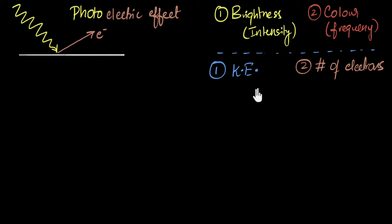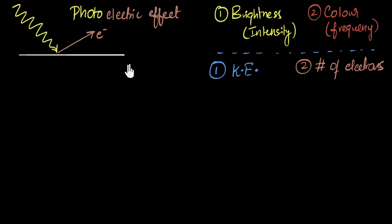So the stage is set: people wanted to figure out how changing these two things about light affects these two things about the electrons. Some of you may wonder how we measured these things — electrons are so tiny, how do you measure their speed, their energy, or how many are coming out per second? There are some clever experiments we'll talk about in other videos. In this video, let's focus on the experimental results and how they shocked everyone.